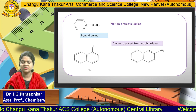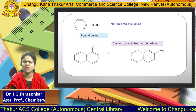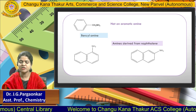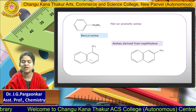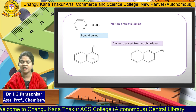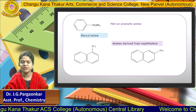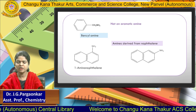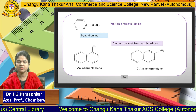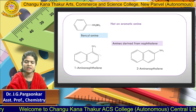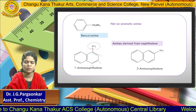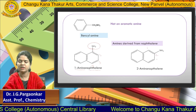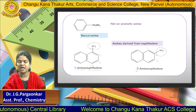The next two structures are amines derived from naphthalene — two benzene rings fused together. The NH₂ group is attached to naphthalene at different positions. Numbering the positions: one, two, three, four — the first structure has amino at position one, so its name is 1-aminonaphthalene; the second has amino at position two, so it is 2-aminonaphthalene.